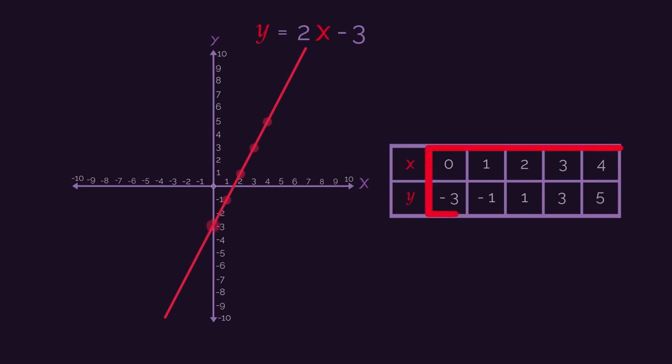We plotted five coordinates. But as a rule, you need a minimum of three coordinates to accurately plot a straight line. We just had an extra two in case you made a mistake.